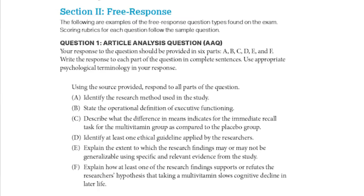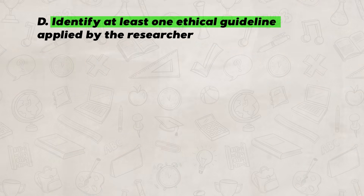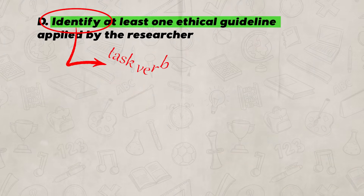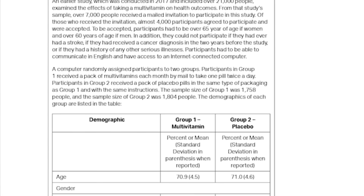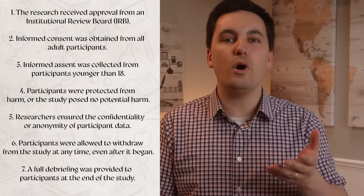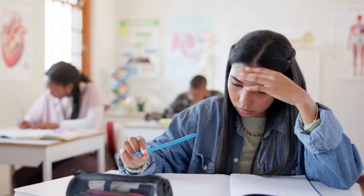Part D will have you identify at least one ethical guideline applied by the researcher. You only have to identify one guideline, and the task verb is 'identify,' so you don't need a long essay. You will generally find the answer in the participants or methods section of the study. When looking for ethical guidelines, there are only certain ones that will work as answers. Make sure you identify a guideline that is actually part of the study — not one you think could or should be there. Just pick one and go with it.